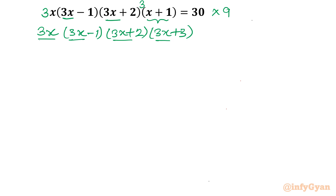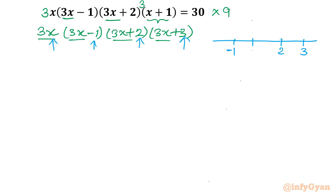Now if I draw a number line, I can show these points: 2 and 3, then minus 1, and somewhere here 0. So we have 4 points on this number line.